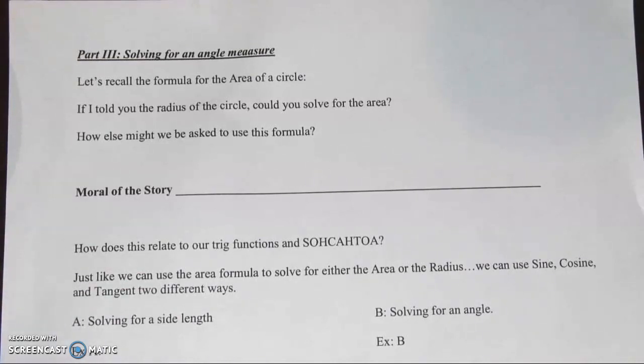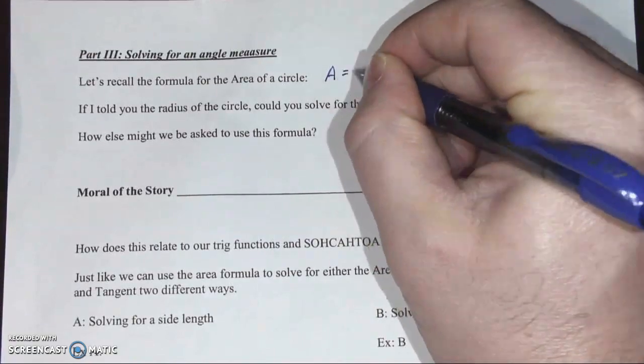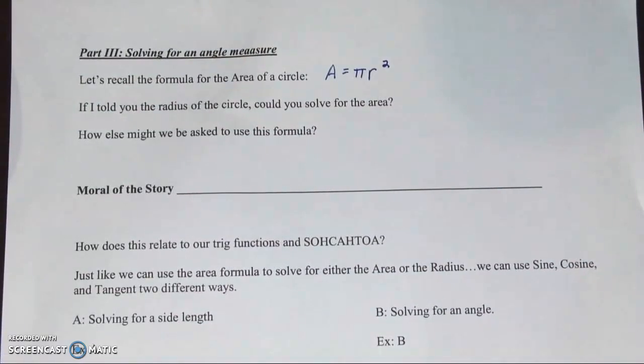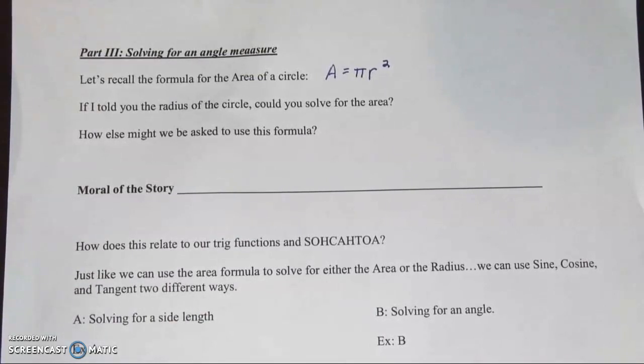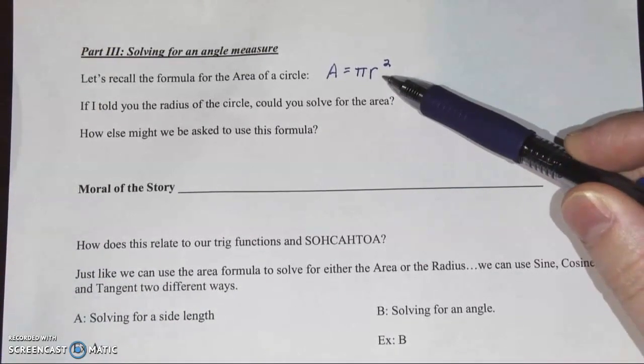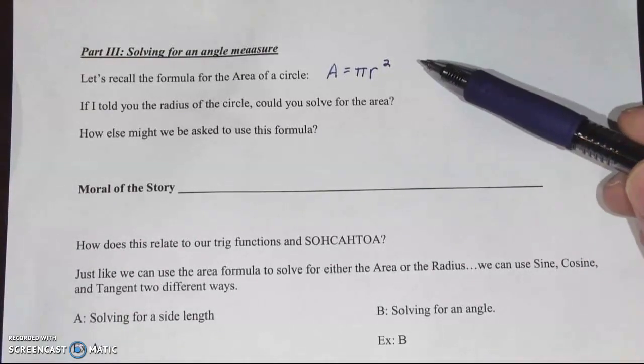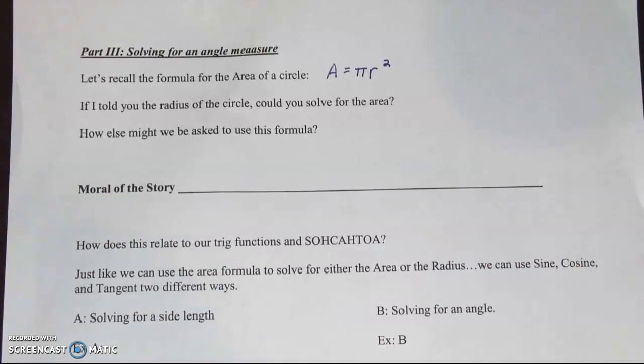So the area formula for a circle, remember that would be area equals pi r squared. Traditionally, the first time we learn a formula like this, it's because we're looking for the area. We call it the area formula. Usually we'd be looking for the area. So if I told you the radius of the circle, could you solve for the area? Of course we could. If the radius was 5, we'd plug in a 5 right here. 5 squared is 25. 25 pi. If we were looking for an answer in terms of pi, no big deal. How else might we be asked to use this formula? This is something that we've talked about a lot in class. Every single formula can be used in more than one way.